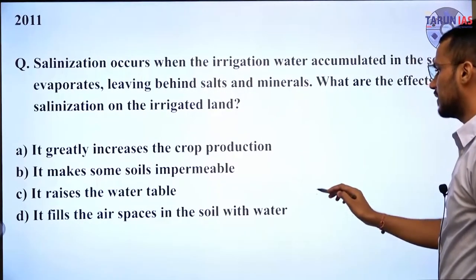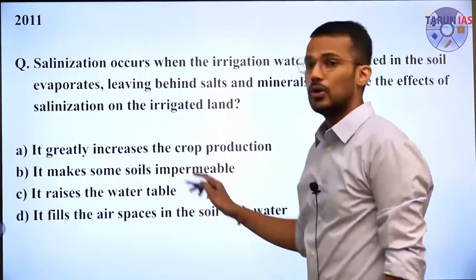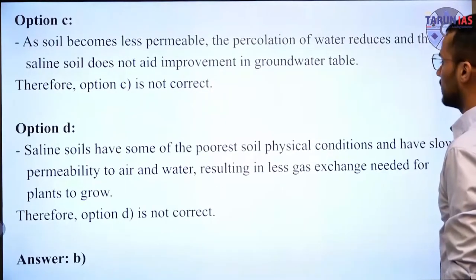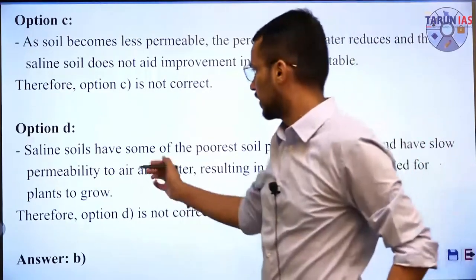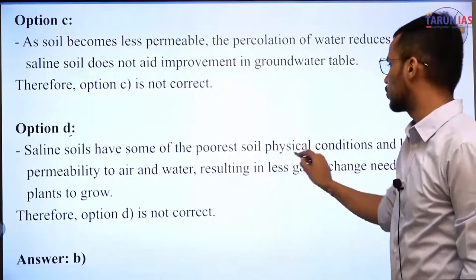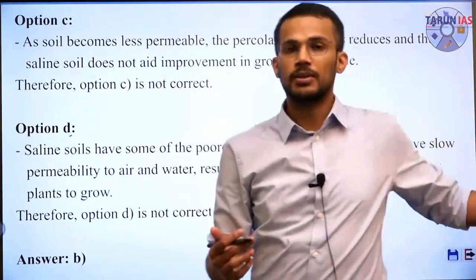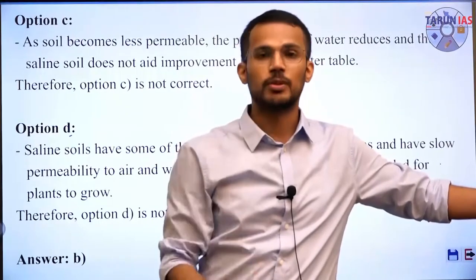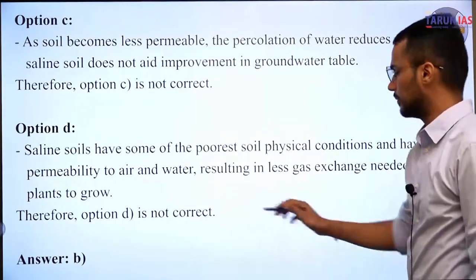The fourth option D is: it fills the air spaces in the soil with water. This is also incorrect because it is not water being filled inside the air spaces in the soil — rather, it is salts that fill those air spaces. Saline soils have poor physical conditions and slow permeability to air and water, resulting in less gas exchange needed for plant growth. It is sodium and chlorine from the water that fill these air spaces. Hence option D is also incorrect, and the correct answer is B.